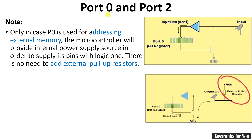If we are using Port 0 only for connection of external memory and the external memory is only 8-bit, then only Port 0 will be used and Port 2 should not be used at that time, because it will automatically work as a memory connector and cannot work as an IO port. Also note that if you are using Port 0 for external memory, no pull-up resistors should be connected.